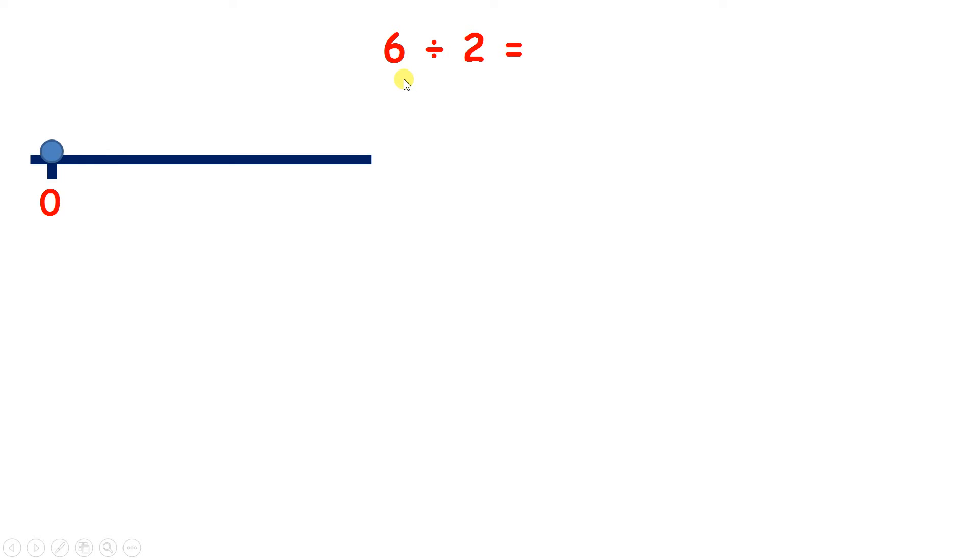So let's count in steps of 2 until we get to 6. 2, 4, 6. And we needed 1, 2, 3 jumps to get to 6. So 6 divided by 2 is 3.